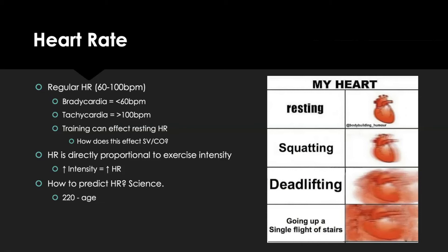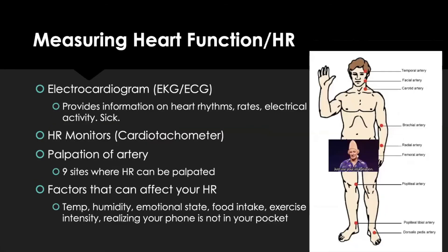Heart rate is directly proportional to exercise intensity — the higher the intensity, the higher the heart rate. For predicting maximum heart rate, the equation we use in this class is simply 220 minus age. It's not the most precise formula, but it's easy to apply.